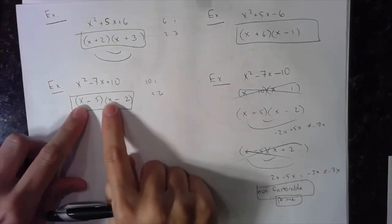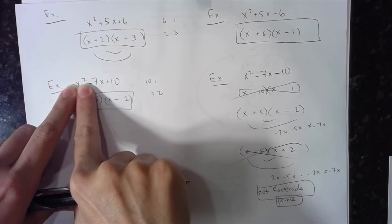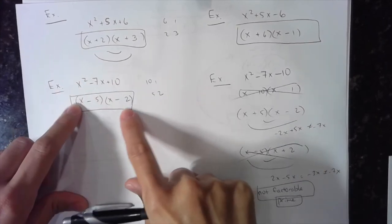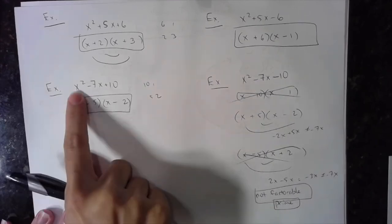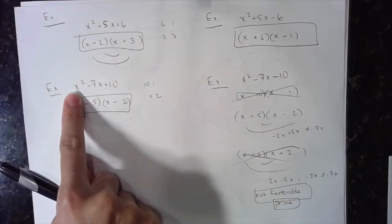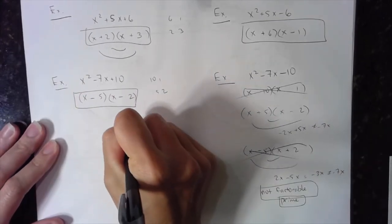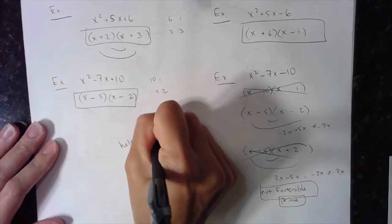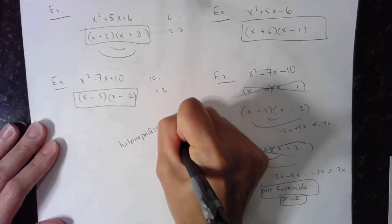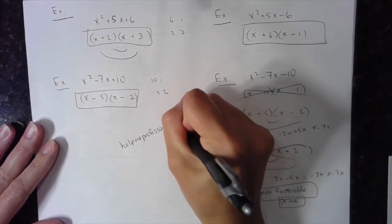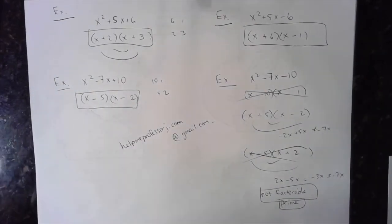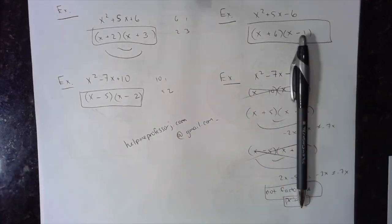Pay attention to your signs. The core concept: the first two values multiply to give the first term, the last two values multiply to give the last term, and the outer and inner combine to give the middle term. This same concept applies in the next video when the coefficient in front of x squared is something other than one. Check out my website, email me, comment below if you need more examples. There are other methods of factoring, but this is the quickest — make sure you're good with your multiplication tables.